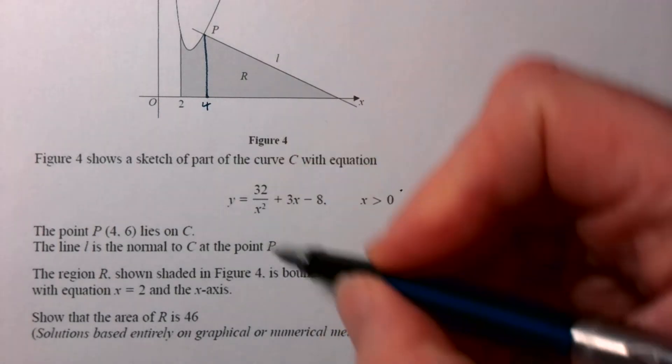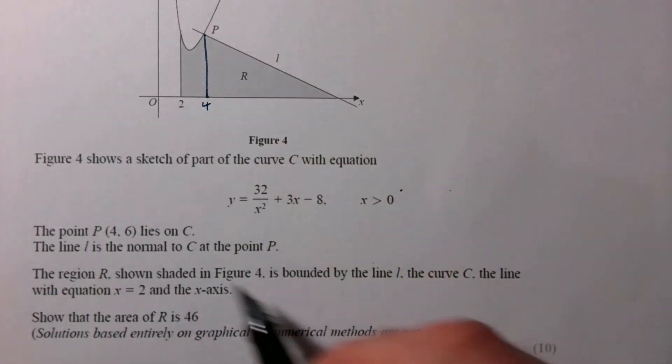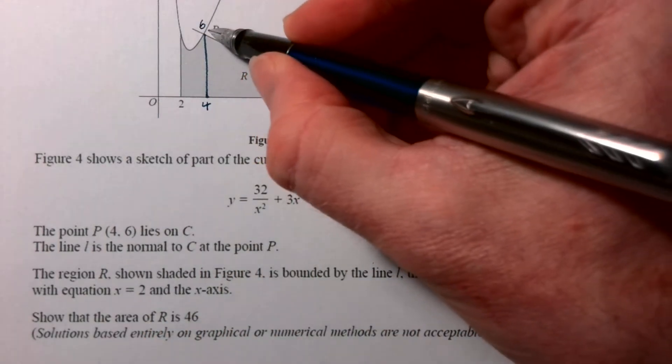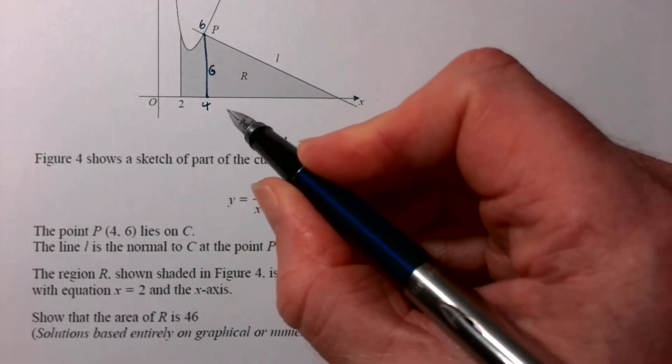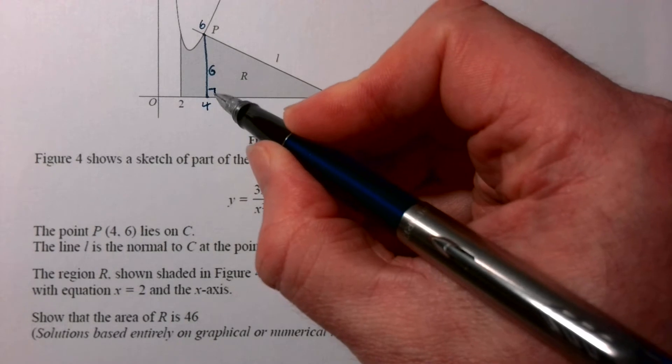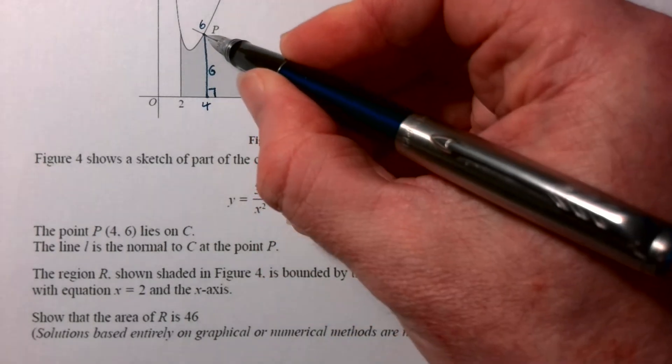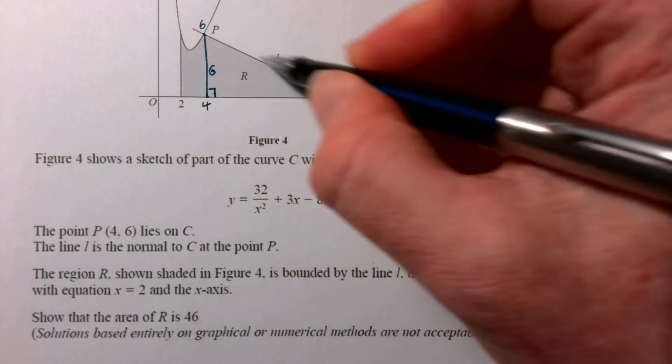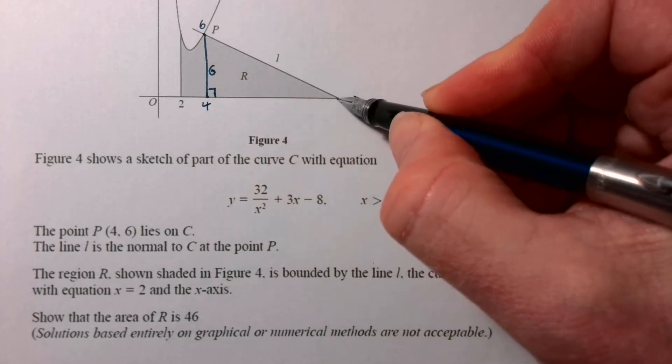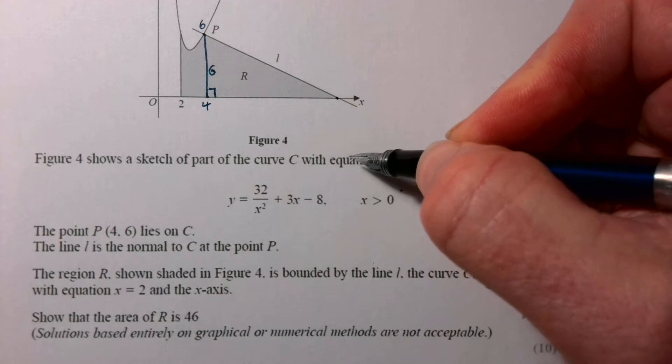And for that, we need to know - we know that this point here is 4, 6, so we know that's 6 high, so the height is 6. We just need to know what the base is of that right-angled triangle. For that, we need to know what the gradient is. You could work out the equation of the line, but once you know the gradient, you can just work out what that intersection must be.